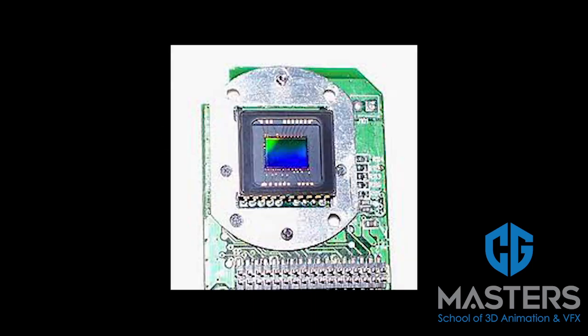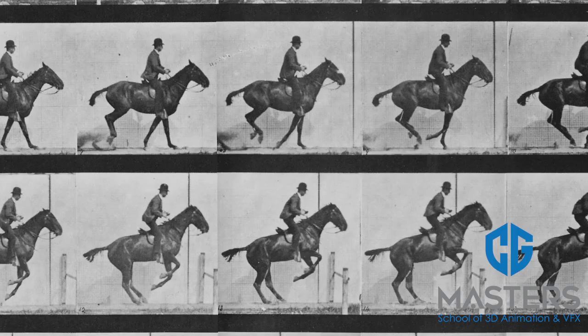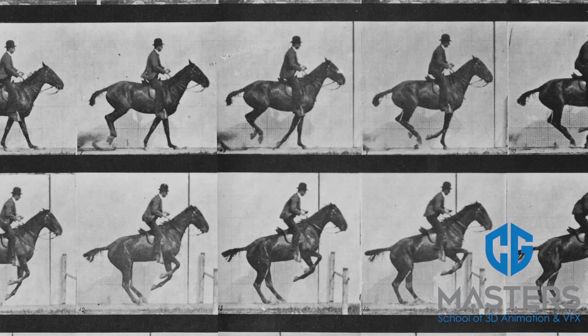A motion picture camera exposes a light sensitive recording medium, usually film or an electronic recording device called a CCD, to focused light. Images are recorded in sequence. The recorded images are played back in sequence to generate a moving picture.